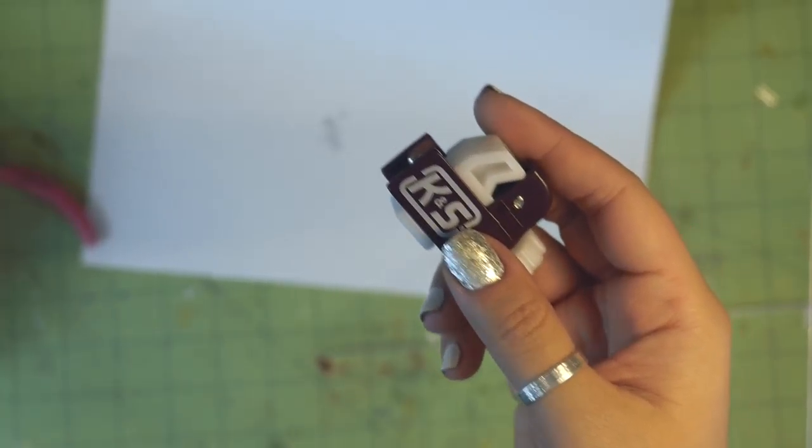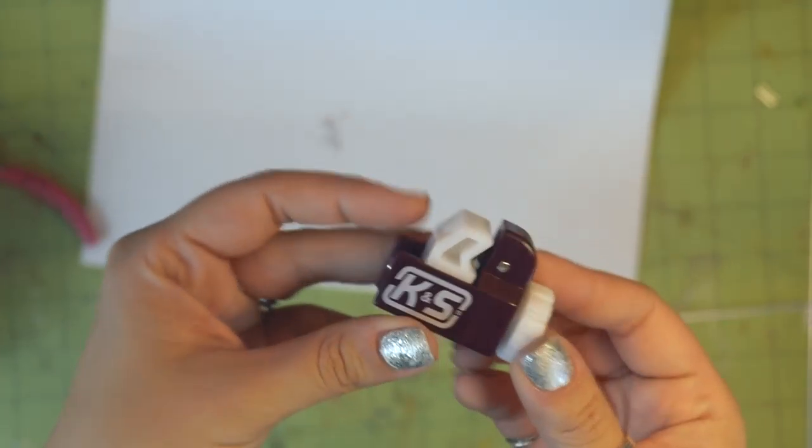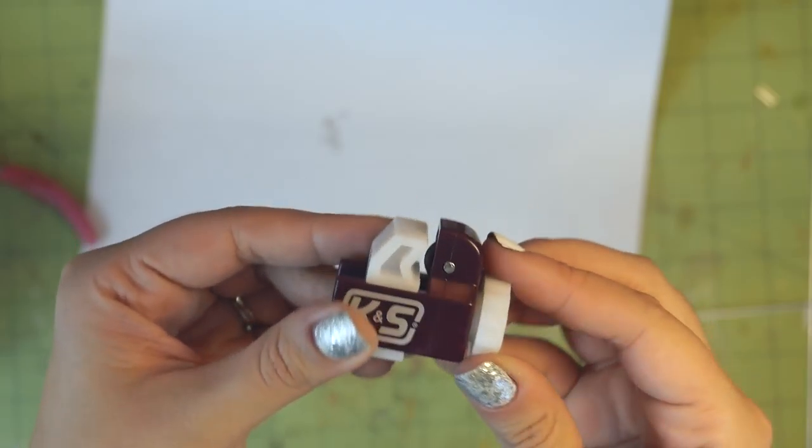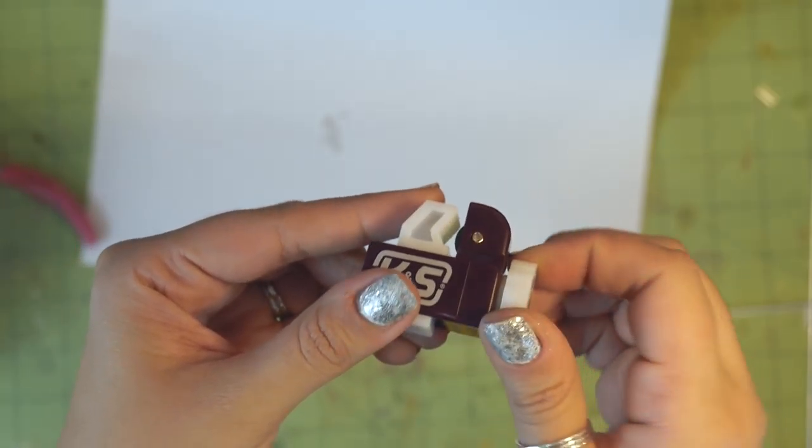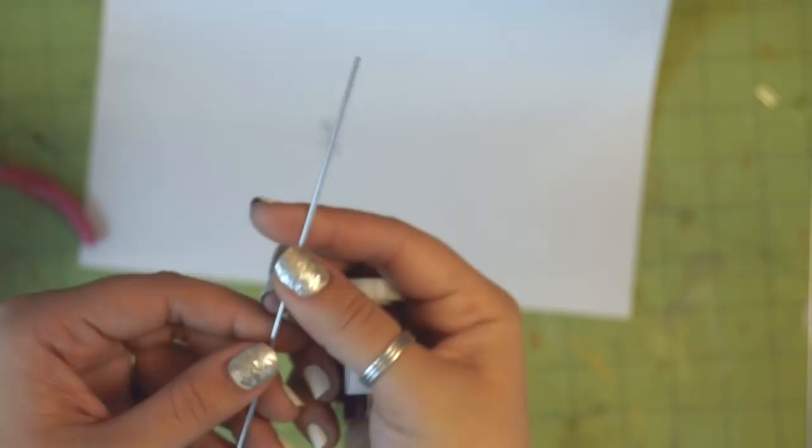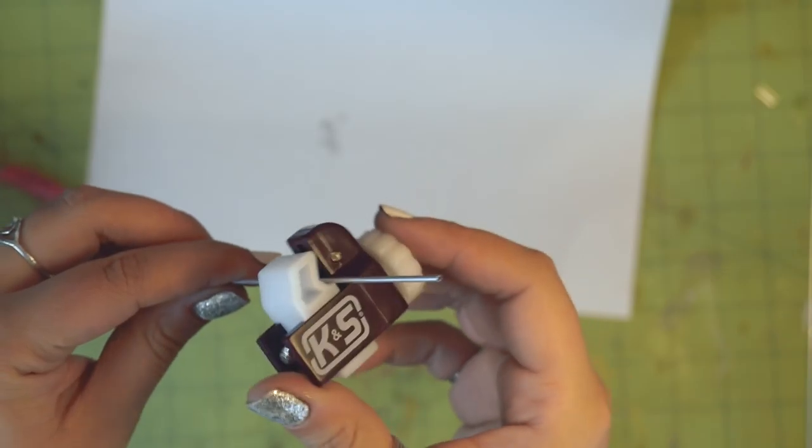I initially got this small pipe cutter to use with these tubes because if you use normal wire cutters, it crimps the tube together at the ends, rendering that piece useless for this project anyway. The problem, however, is that the 1/16th inch tubes that I got were too small to use in this cutter. See?